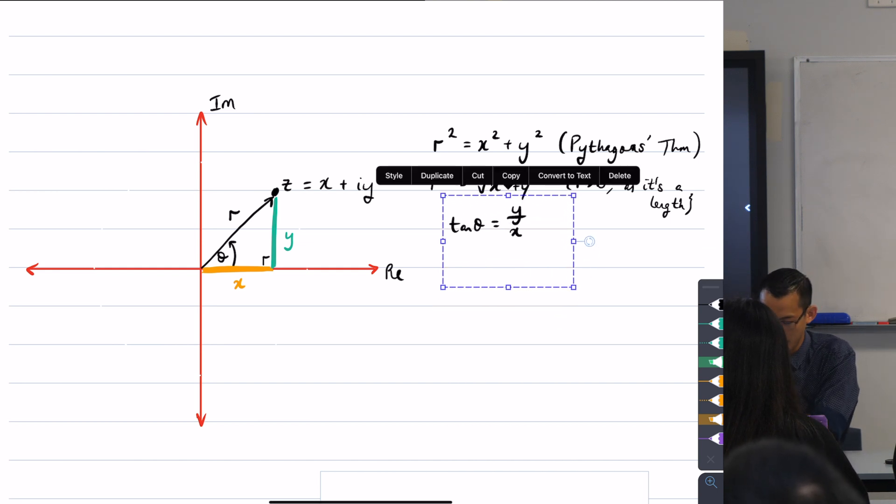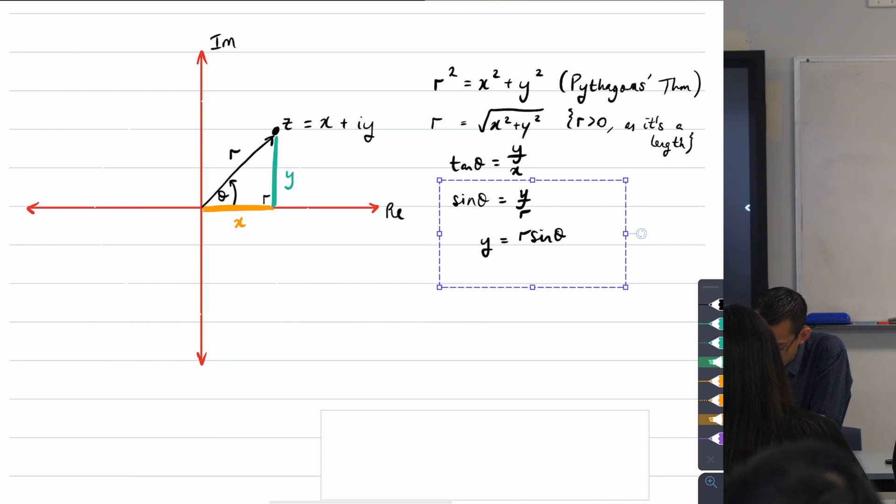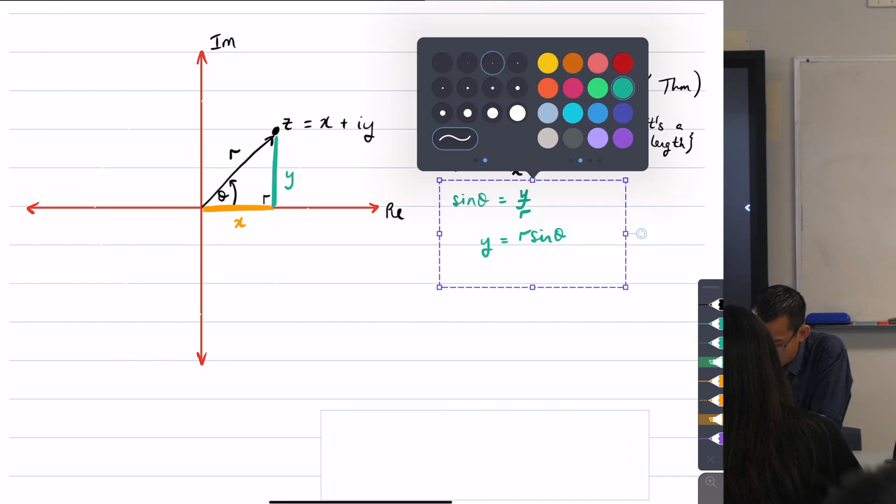Instead of saying just tan theta, what I'm going to say is, if I think about the other ratios, like say for example, sin theta, what do you get out of sin theta in this right angle triangle? y over r. Which means I can say y equals r sine theta. Do you agree with that? That's okay. I should put that in the appropriate colour, sorry, I think that was green. So you should jot that down because that's really important.